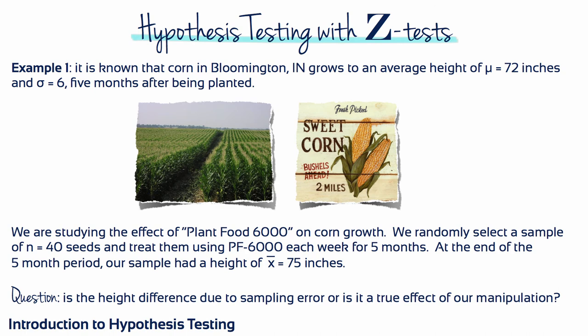Let's talk through a few examples. Example 1: Corn in Bloomington, Indiana grows to an average height of 72 inches with a standard deviation of 6, five months after it's planted. We want to study the effect of a fertilizer called Plant Food 6000 on corn growth. We randomly select a sample of N equals 40 seeds and treat them using PF 6000 each week for 5 months. At the end of the 5-month period, our sample has a height of 75 inches. Is the height difference due to random variation and chance occurrences — sampling error — or is it a true effect of our treatment with Plant Food 6000?